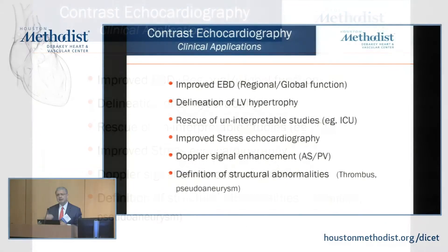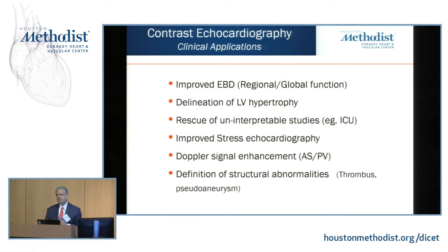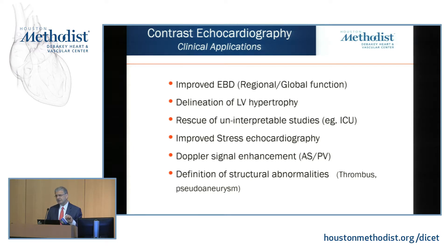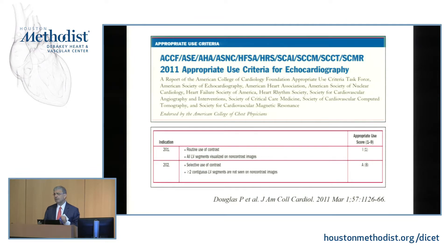We use it a little bit off-label for the same reasons. The reasons are: you want to delineate hypertrophy at times; the first indication is you can rescue uninterpretable studies; stress echocardiography is not formally approved but we use it, and some companies are having studies now to hopefully make it an approved indication. It can enhance Doppler signal from aortic stenosis, with the caution that if contrast is quite high, you may overestimate the velocity and therefore overestimate the gradient. At times it helps with thrombus definition or pseudoaneurysm formation. The inappropriate use is routine use when all segments are already visualized.